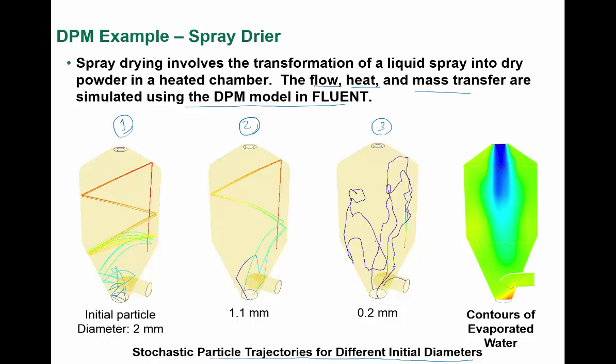When you decrease the diameter, you can see how the flow pattern changes drastically. A particular diameter follows probably the same pattern, but because of the low diameter, the type of pattern completely changes. Based on that, the liquid spray used for powder in the heated chamber — where flow, heat, and mass transfer are simulated — will behave according to this new behavior.